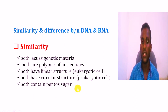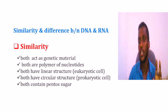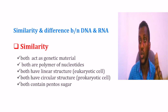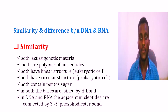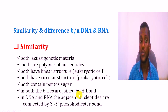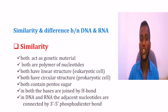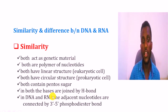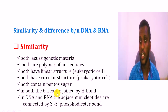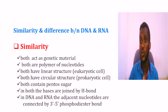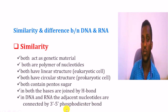Another similarity: both contain pentose sugar — a five-carbon sugar. That is the oxy-ribose. Looking at the carbon numbers, there is also the nitrogenous base. The nitrogenous bases are joined with hydrogen bonds. This is also the source of nitrogen, nitrogenous base, and phosphorus. The phosphodiester bond connects the nucleotides, linking the pentose sugar — either ribose or deoxyribose.